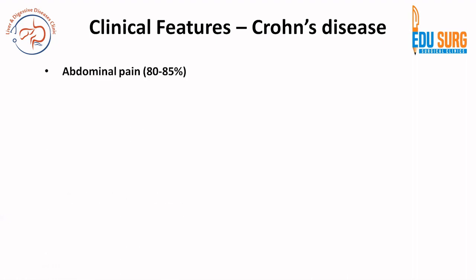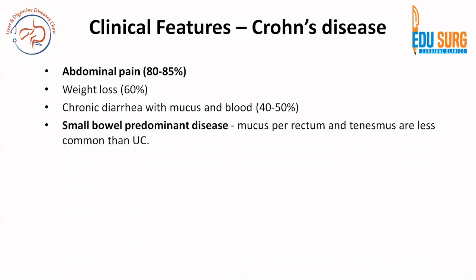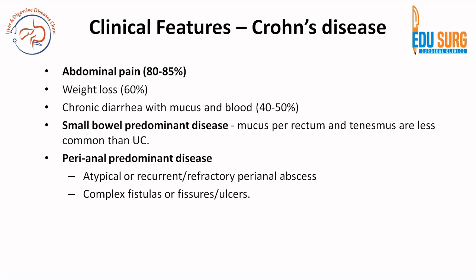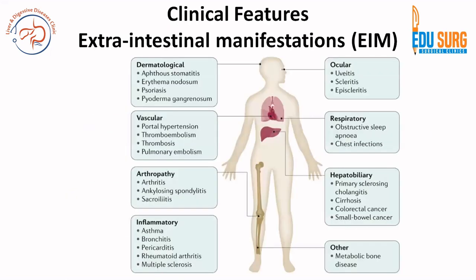Moving to Crohn's disease: abdominal pain is the most common symptom in 80 to 85 percent of cases, and weight loss is seen in 60 percent of cases. Chronic diarrhea with mucus and blood is less common in Crohn's disease, seen only in 40 to 50 percent of cases. In small bowel predominant disease, mucus per rectum and tenesmus are less common than in ulcerative colitis. In perianal predominant disease, patients present with atypical or refractory perianal abscess, complex fistulas, fissures, or ulcers. Rarely, Crohn's disease can also present with upper GI tract disease, with severe epigastric pain, nausea, vomiting, or dyspepsia, as Crohn's disease can affect any part of the gastrointestinal tract.